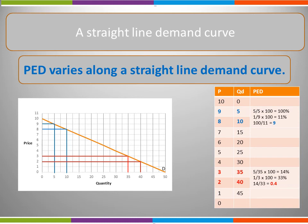If we were to carry out this calculation along our demand curve, the lower down we got the greater the degree of inelasticity, until we reached a situation where demand was perfectly inelastic. Equally, at the other end, as we move from the centre upwards, the elasticity continues to increase, until we reach an extreme where we have a perfectly elastic product.